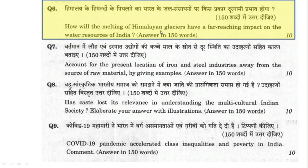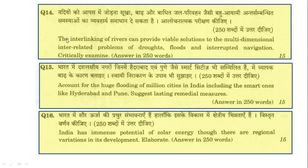Other 2020 GS1 environmental questions included: 'How has the melting of Himalayan glaciers had far-reaching impacts on water resources of India?' — related to effects on geophysical structures. Also, 'The interlinking of rivers can provide viable solutions to multidimensional interrelated problems of drought, floods, and interrupted navigation. Critically examine.' And, 'Account for the huge flooding of millions of cities in India including smart ones like Hyderabad and Pune. Suggest lasting remedial measures.'